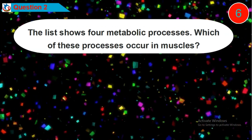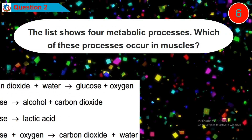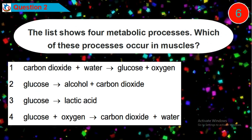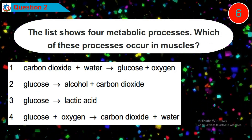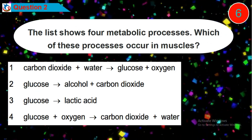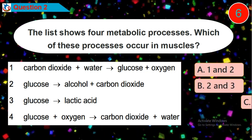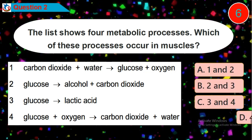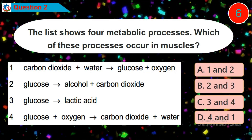Question 2: The list shows four metabolic processes. Which of these processes occur in the muscles? Is it option A, B, C, or D?